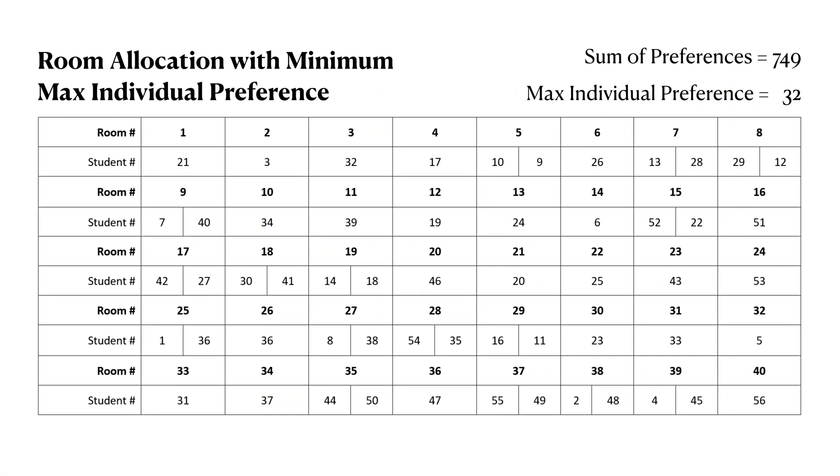The PSO run that came out with the minimum upper bound on the individual preference number gives the following room allocation. The sum of preferences is close to the median of the 25 runs.